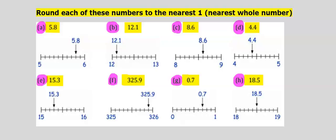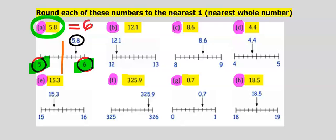Round each of these numbers to the nearest one, which is nearest whole number. Let's consider 5.8. 5 is a whole number and 6 is also a whole number, and this is halfway between them. 5.8 is closer to 6 than to 5. Your answer must either be 5 or 6. Our answer is 6.